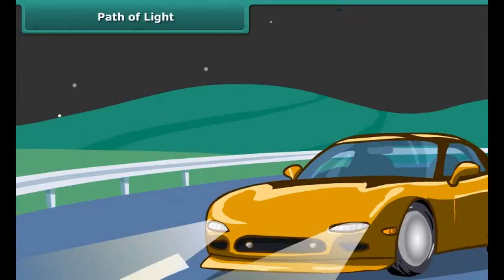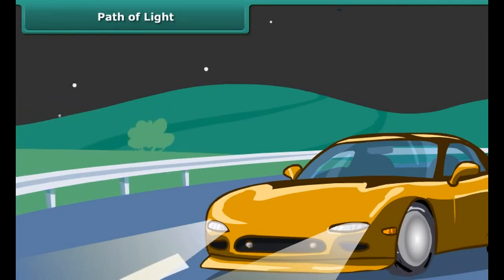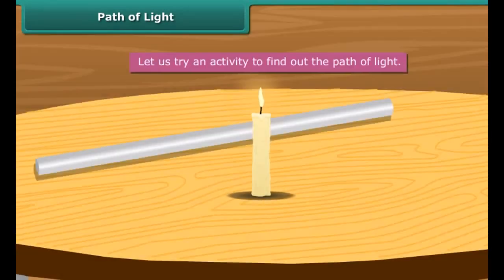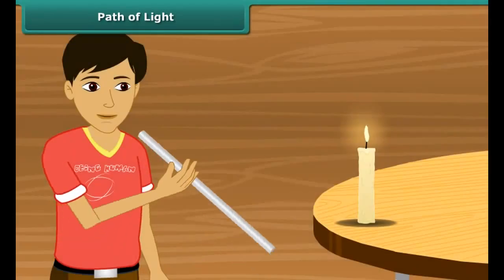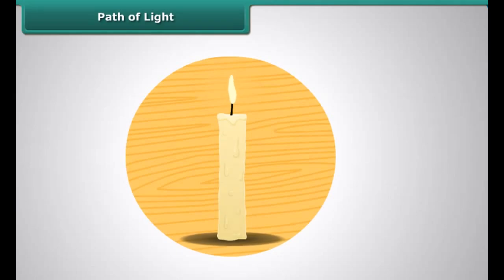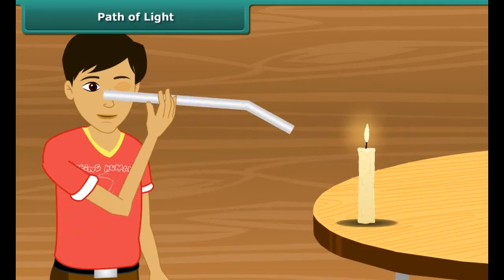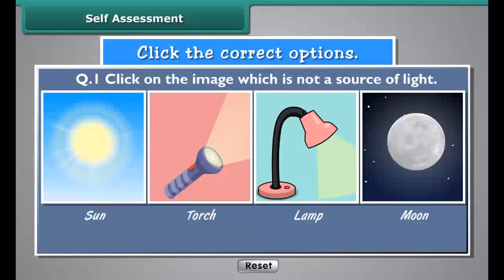Path of light. Have you ever noticed the headlamps of a car giving straight beams of light? Come, let us try an activity to find out the path of light. Take a lighted candle and a straight pipe. Now look at the candle through the straight pipe — you can easily see it. Now take a bent pipe and look at the candle through it. Are you able to see the candle's flame? Probably not. So now you know that light travels along straight lines.